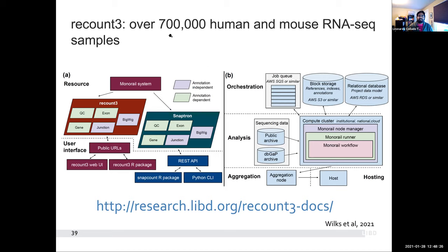People keep generating data. We are now basically finishing Recount3, which is going to have access to over 700,000 human and mouse RNA-seq samples. We're already working on an update for it that will bring us over the 1 million mark. Processing this amount of public data takes a lot of work. Christopher Wilks wrote a system called the monorail system that is able to process all this data across different machines and different infrastructures. You can access the data from public archives or private archives such as dbGaP, process all the data, then aggregate it at a low cost. He was processing data at the rate of four terabytes per hour — that's how you process over 700,000 samples.